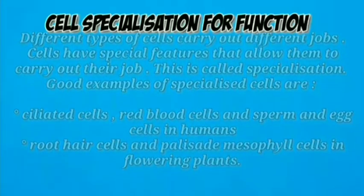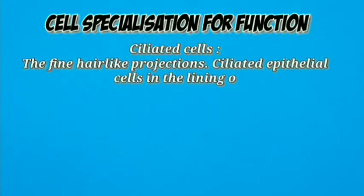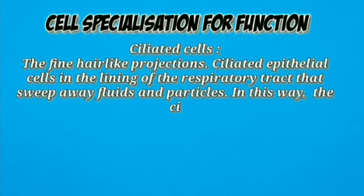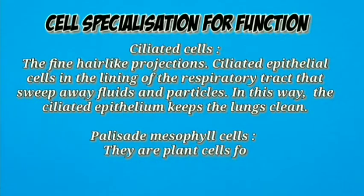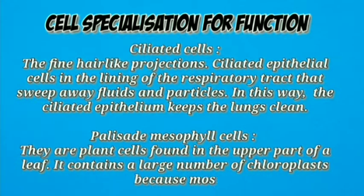Ciliated cells: Tiny hair-like structures on the surface of the cell. These hairs sweep dust away and mucus traps the dust and bacteria up to the back of the throat where it can be swallowed.